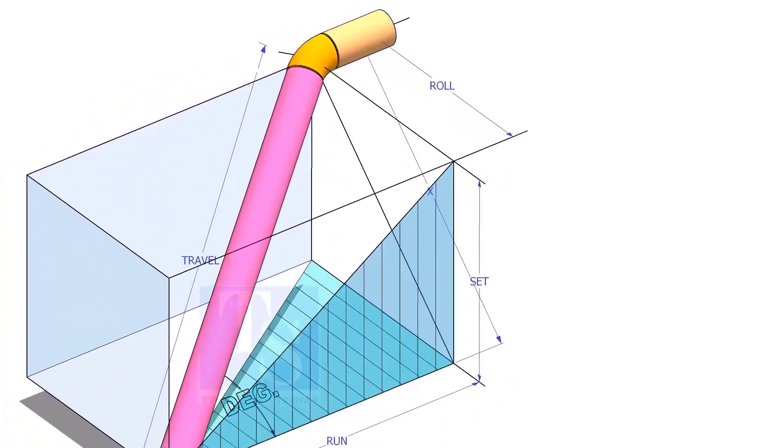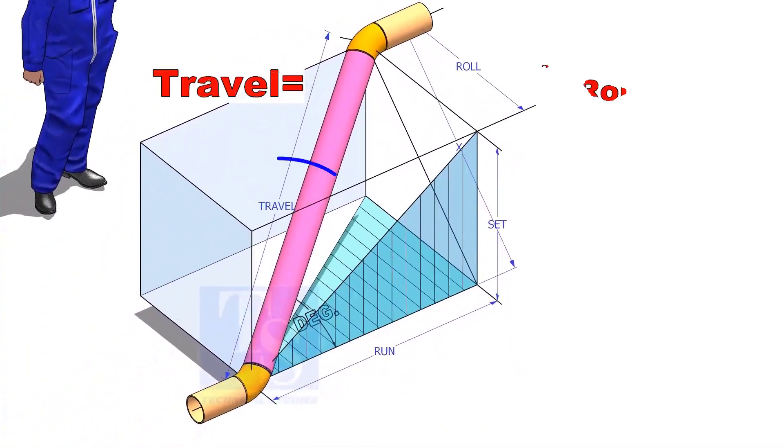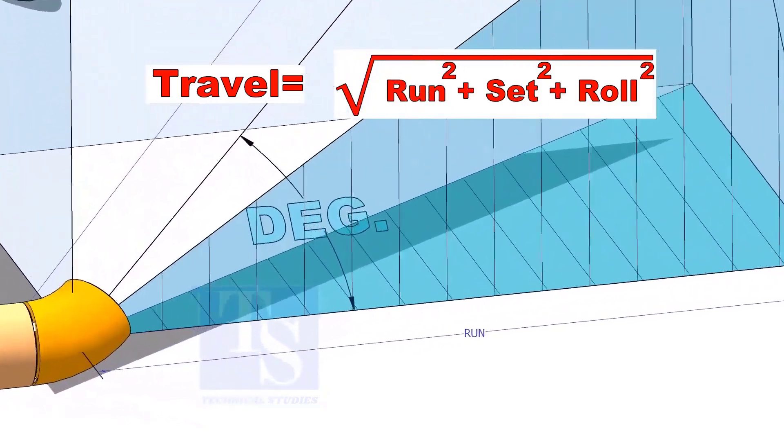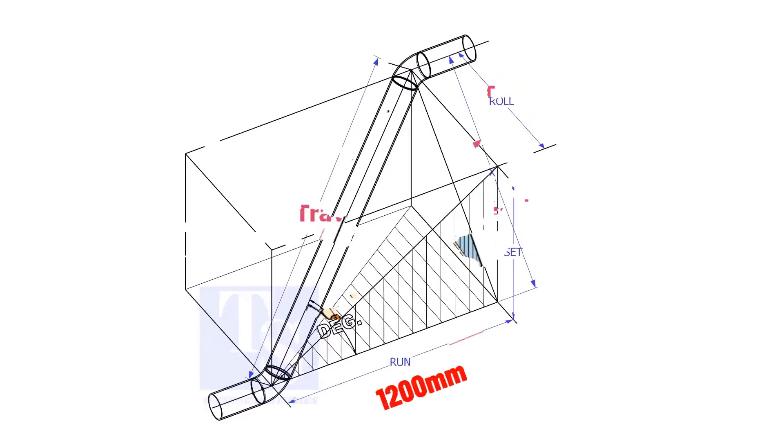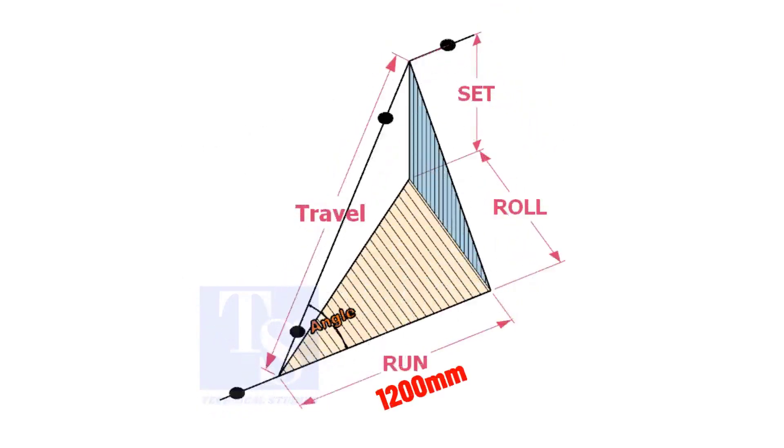The formula to calculate the travel length is root of the sum of the run, set and roll. Assume that the run is 1200 mm, set is 1000 mm and the roll is 800 mm. Calculate the travel length.